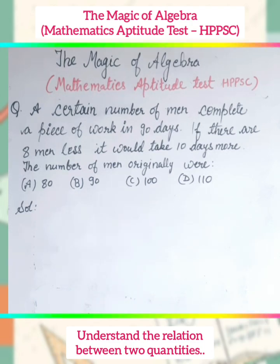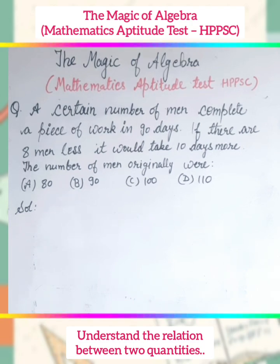A certain number of men complete a piece of work in 90 days. If there are 8 men less, it would take 10 days more. Find the number of men originally there. The options are 80, 90, 100, and 110.